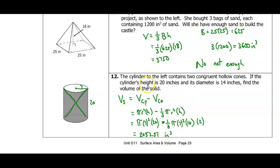This is like the shaded area problems from before, where you take the outer figure minus the unshaded region. Here, it's the whole cylinder minus the hollow cones, giving the total solid volume.